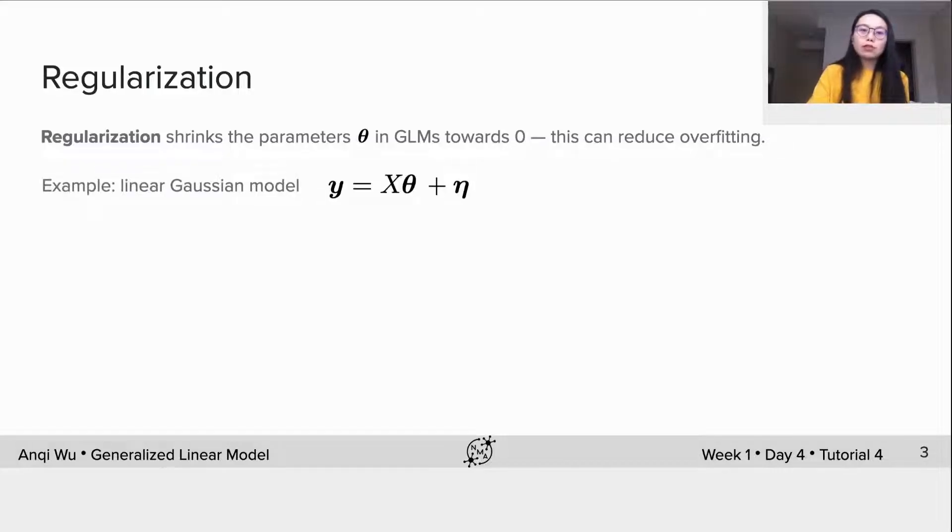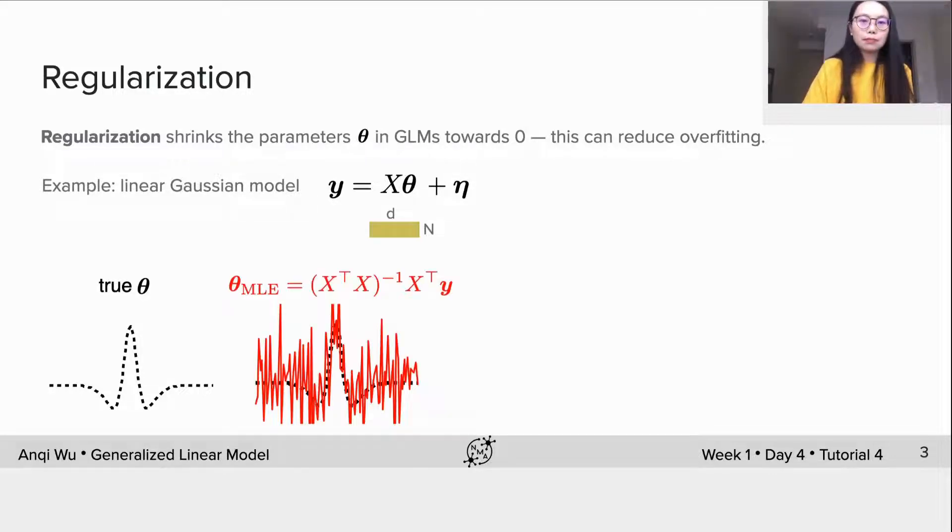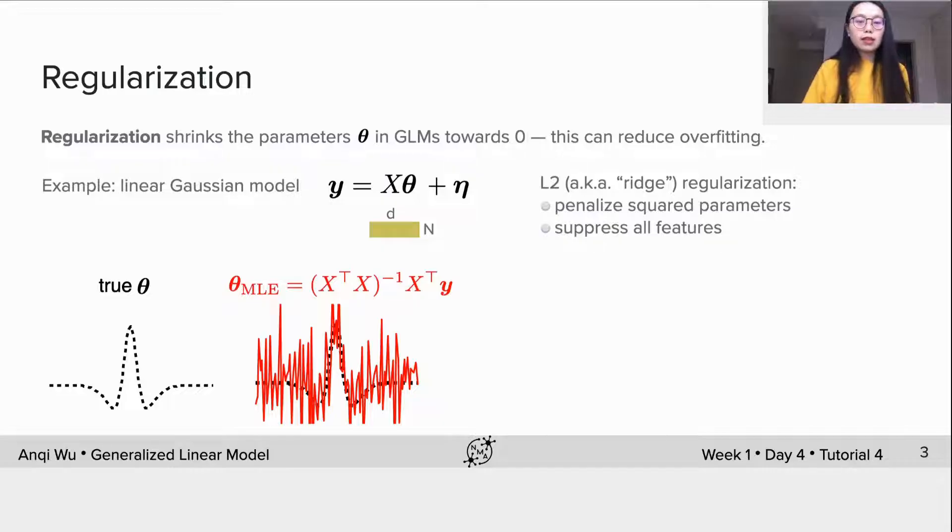Here is some intuition with an example using a linear Gaussian model. When the matrix X has more features than data points, D is larger than N, so it's a fat matrix. Assume we have some true parameter theta plotted as follows. Each element in this vector theta corresponds to a feature from the input X. We use this theta and X to generate some data Y and fit a linear Gaussian model using MLE. MLE is calculated with this closed-form solution and we can plot it on top of the true theta to compare. We can see that theta MLE adapts to reflect quirks of training data and this estimate doesn't well generalize to other data, even sampled from the same true model, since noise doesn't repeatedly occur in any data sample.